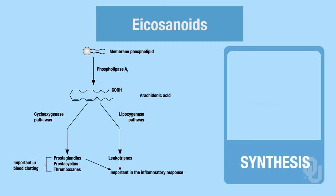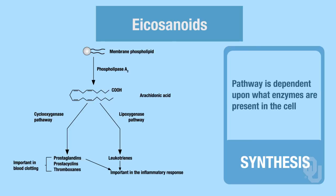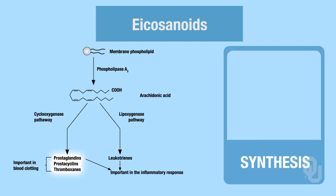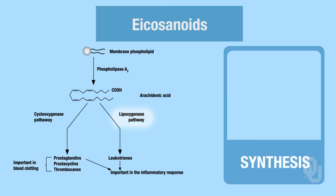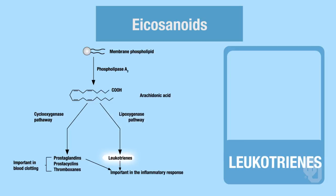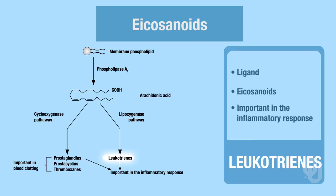Which pathway occurs is completely dependent upon what enzymes are present in the cell. If the cyclooxygenase pathway takes place, we produce prostaglandins, prostacyclins, and thromboxanes — all types of eicosanoids. Prostacyclins and thromboxanes are important in blood clotting. If the lipooxygenase pathway occurs and we have the enzymes present to produce leukotrienes, then leukotrienes are produced — a type of ligand in the eicosanoid class that are important in the inflammatory response.